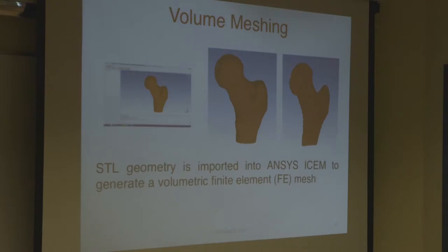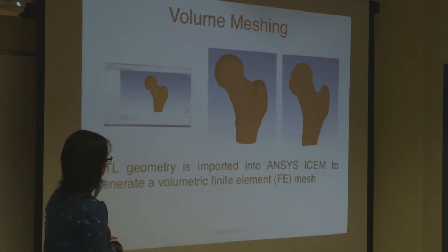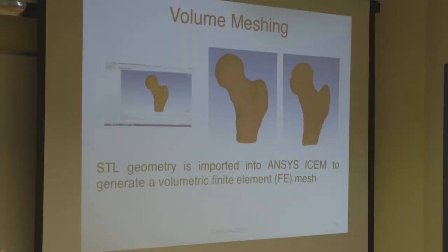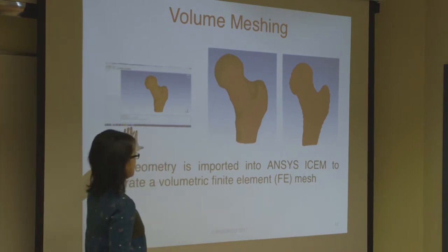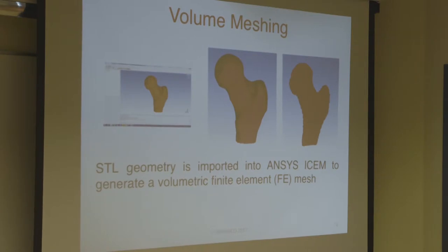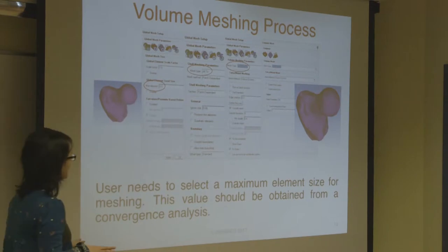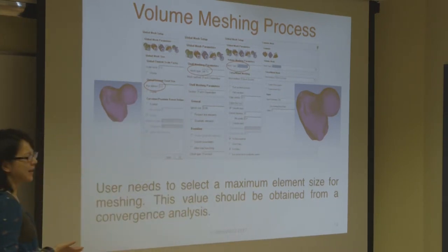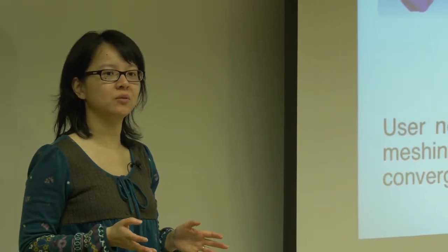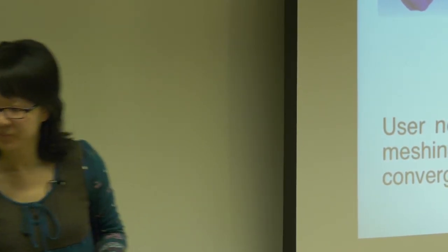The second step, once you have your geometry, is volume meshing. What I'm showing here is what we do in ANSYS iSIM — you can use other software for similar things. The software generates an FE mesh based on your geometry, and you can specify the mesh density you'd like. The most important value to select is what we call maximum element size, which decides how fine your mesh is. In the CT2S workflow, we do an additional step: we add middle nodes to our tetrahedral mesh to increase the accuracy of our FE simulations.